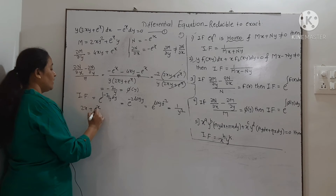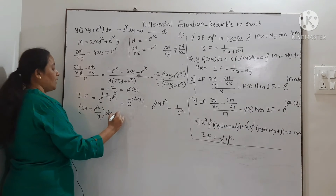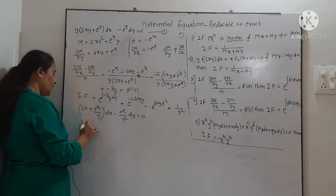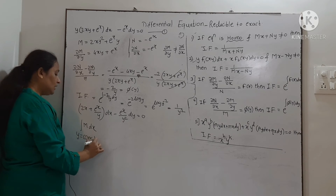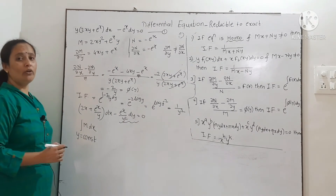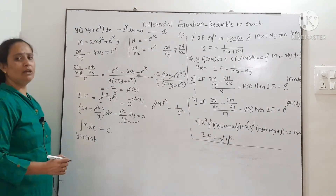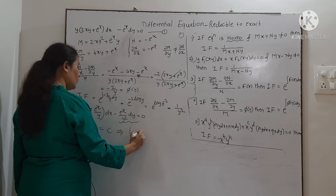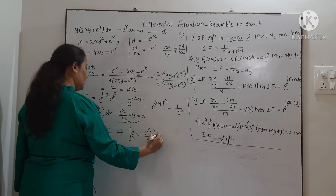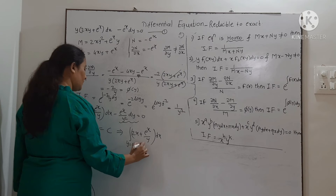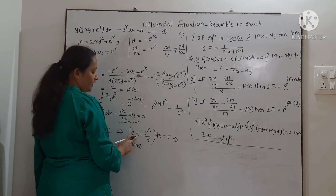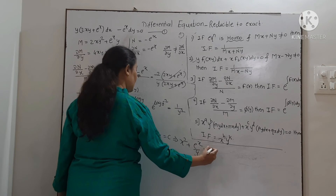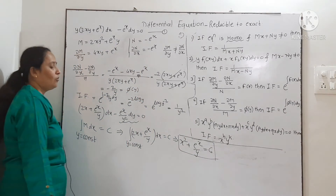Multiply this integrating factor 1/y² to the differential equation. We get (2x + eˣ/y) dx − (eˣ/y²) dy = 0. Finding the solution: there is no term in N free from x, so solution = ∫M dx treating y as constant = c. Integrating: x² + eˣ/y = c. This is the solution.